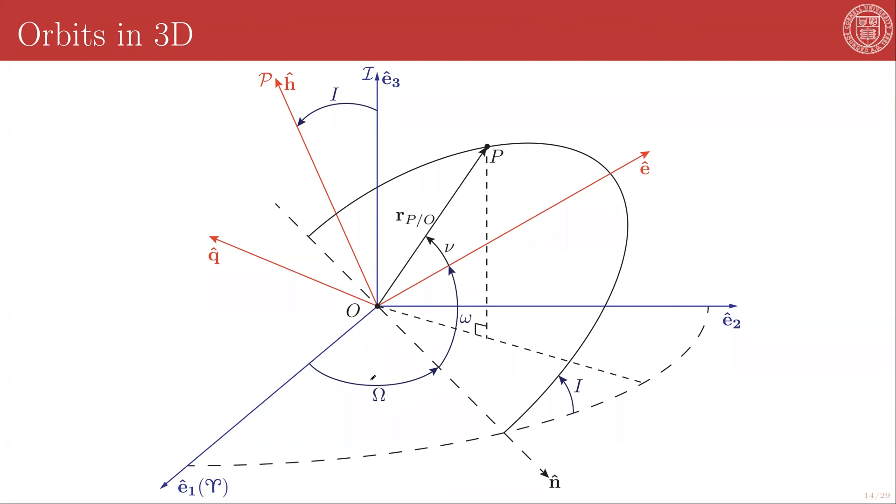This argument is known as the longitude of the ascending node because by convention, we think of the orbiting body as going counterclockwise, and so this is where it rises above the E1, E2 plane, hence the ascending node. That means that the negative N hat direction is the descending node.